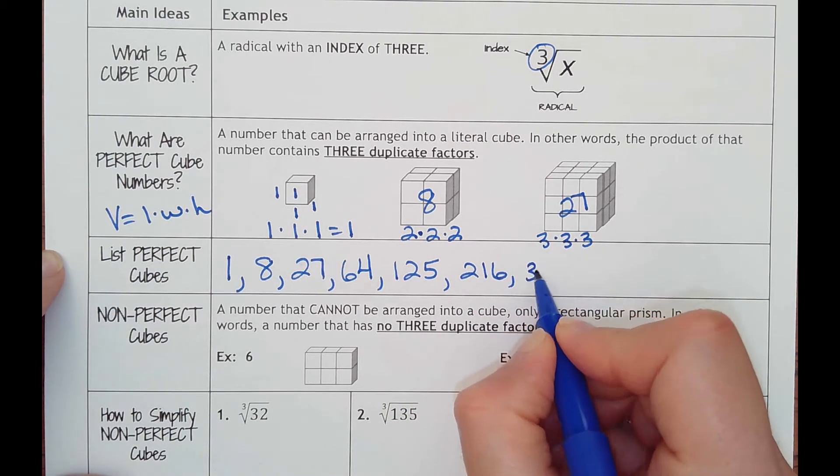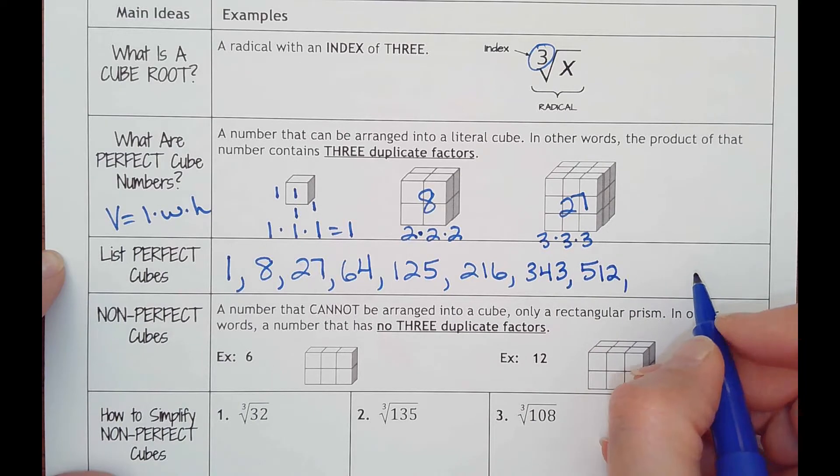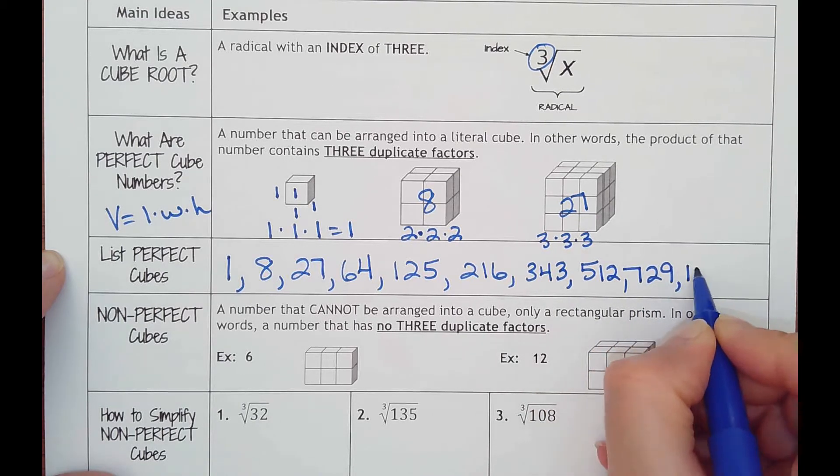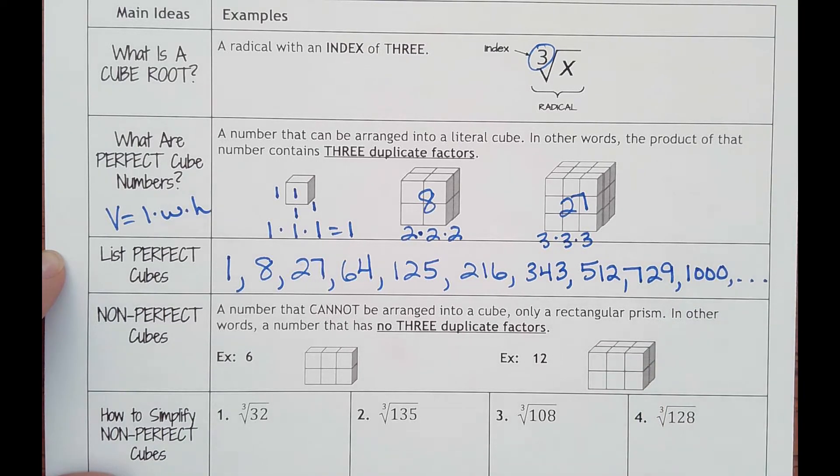Eight cubed is 512. Nine cubed is 729. Ten cubed is a thousand. You can keep going, but that should be sufficient.